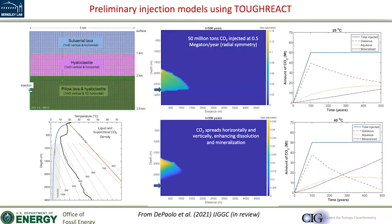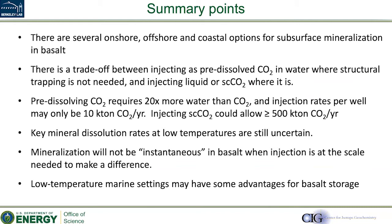We've done some injection models of this. We've done the simulation of injecting 50 million tons of CO2 over a hundred years, and it stays down there. Over on the right, you can see that about 50 to 75% of it gets either mineralized or dissolved over 500 years. This is an environment that hasn't been considered very much, but I think has potential and you could find similar places around the world.